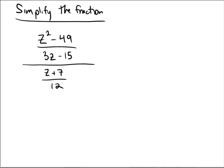So what do we have on top: z squared minus 49 over 3z minus 15, and we're going to multiply by the reciprocal of the bottom number, and the bottom number has a 12 as its numerator and a z plus 7 as its denominator.